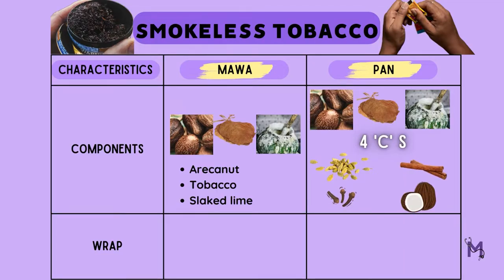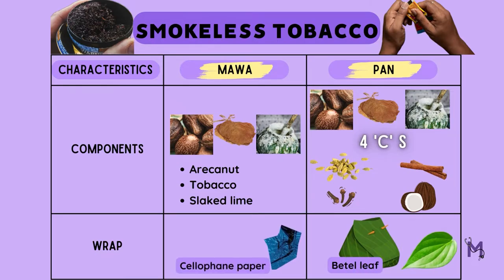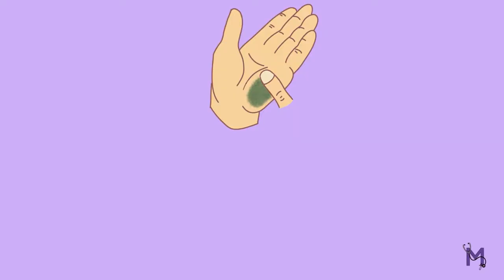While the components of paan are all wrapped up in a betel leaf, the ingredients of mawa are wrapped up in cellophane paper. Before consumption, the packet of mawa is rubbed vigorously to mix the contents, and this mixture is then chewed until it softens, which is then transferred to the mandibular vestibule and kept there for a prolonged time for flavour. This is a common cause of tobacco pouch keratosis.